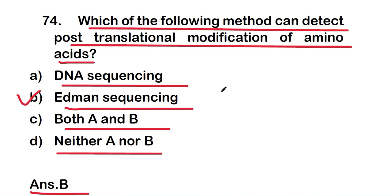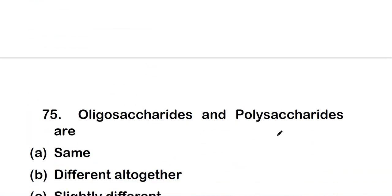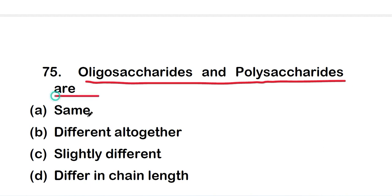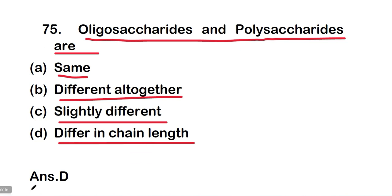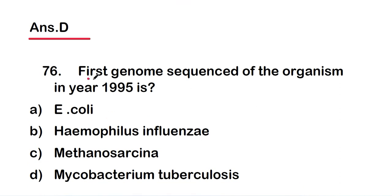Question 75: oligosaccharides and polysaccharides are — option A, the same; option B, different altogether; option C, slightly different; or option D, differ in chain length. The right answer is option D — they differ in chain length.